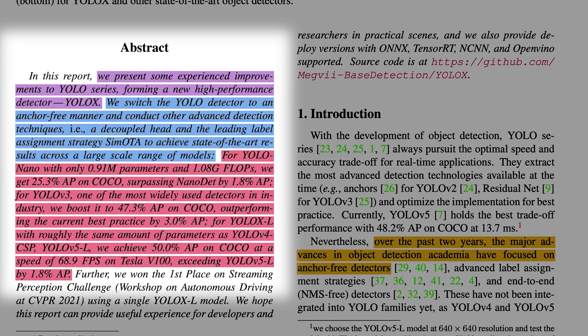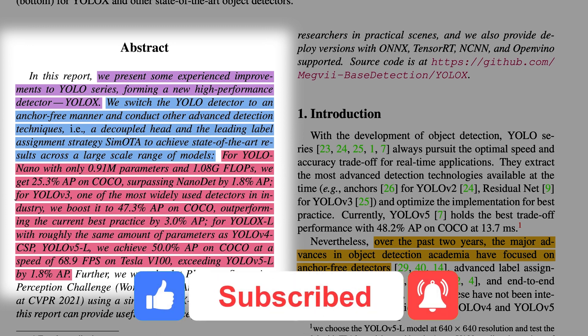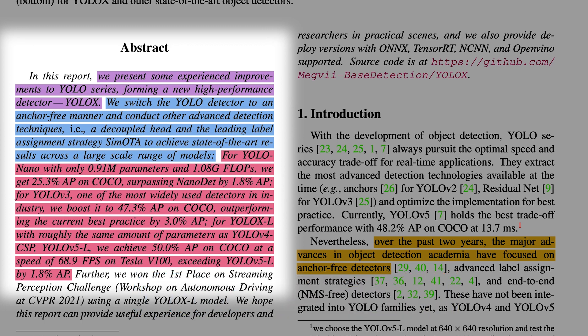And with respect to YOLO V5, which currently is the fastest detector, they have achieved 50.0% AP on COCO at a speed of 68.9 fps on a Tesla V100, which exceeds YOLO V5 by 1.8% average precision. With this YOLOX model, they have won the first place on Streaming Perception Challenge, a workshop on Autonomous Driving at CVPR 2021.